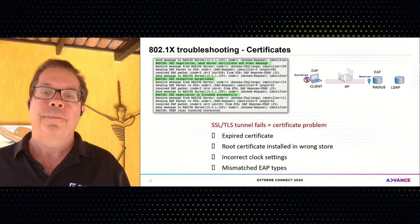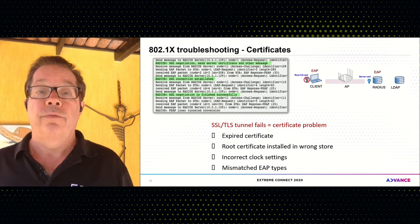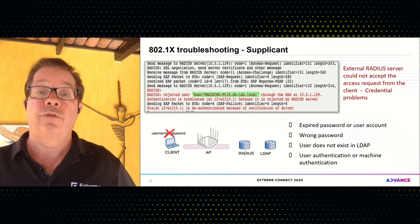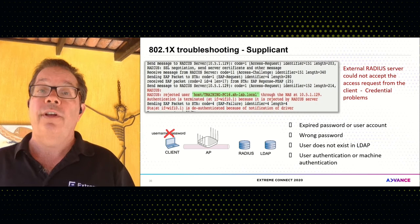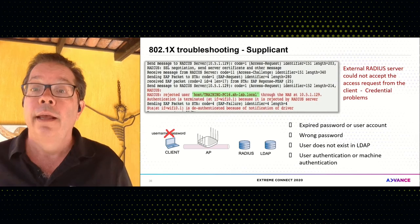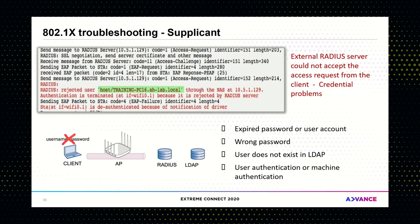802.1X is complex, but we give you the troubleshooting tools to help isolate these problems, including certificate issues which add a lot of the complexity. Other supplicant problems also occur. If the tunnel is up and the supplicant is talking to the RADIUS server, it's probably going to be one of four problems: an expired password or user account; the user typing in the wrong password; the user being removed from the LDAP database; or on the client side they've accidentally configured user authentication when it should be machine authentication, or vice versa.